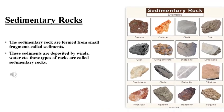The second type is sedimentary rock. Sedimentary rocks are formed from small fragments called sediments. These sediments are deposited by wind and water. Have a look at the examples of sedimentary rocks — for example, sandstone, limestone, and so on.